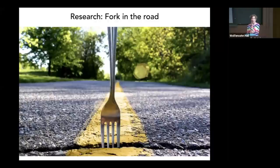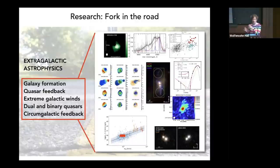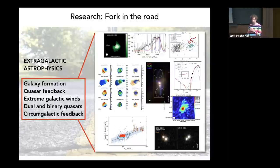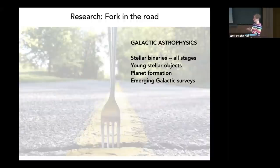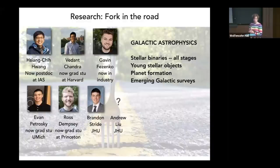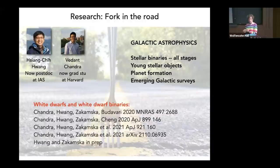Before I get started, I want to say a couple of words. This is a very unusual talk for me to give because I've spent the vast majority of the last 10 years thinking about completely different topics. I've mostly worked on extragalactic astrophysics, especially observational studies of quasar feedback, where my group has been developing key methods for studying multi-phase quasar winds propagating throughout galaxies. But in the last few years I've been increasingly interested in galactic astrophysics, especially stellar binaries at all stages. Today I'll talk specifically about white dwarfs and white dwarf binaries — papers written with Shanti Kwong, now a postdoc here, and Vedant Chandra, a graduate student at Harvard.